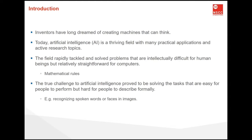But the true challenge to artificial intelligence is solving tasks that are easy for people to perform but hard to describe formally. Imagine tackling this problem: writing a program that predicts tomorrow's weather given geographic information, satellite images, and a trailing window of past weather. Even elite programmers are incapable of coding such solutions from scratch, because the program must follow patterns that change over time. The relationships between pixels or abstract categories may be too complicated, requiring millions of computations beyond our conscious understanding, even if our eyes can manage the task easily.